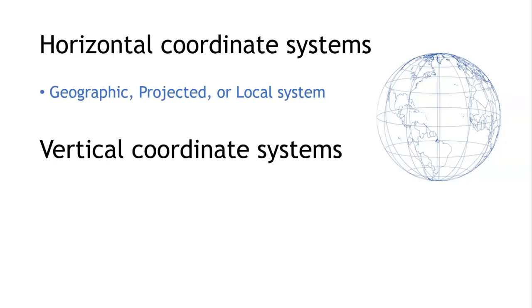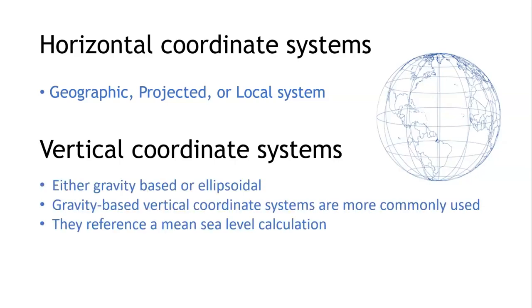Whereas the vertical coordinate systems are either gravity-based or based on ellipsoidal shapes. The gravity-based vertical coordinate systems are more commonly used. They reference a mean sea level calculation—basically they are involved in the calculation of the height above the mean sea level.